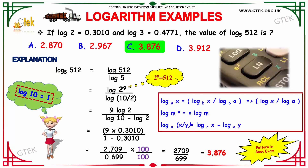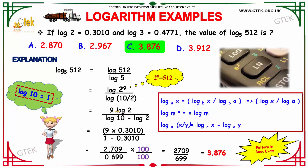We know that 2 to the power 9 is equal to 512. Hence, 512 is written as 2 to the power 9, and 5 can be written as 10 divided by 2. By the property log m to the power n equals n log m, we get 9 log 2 in the numerator. And by the property log x divided by y equals log x minus log y, we apply this to the denominator.